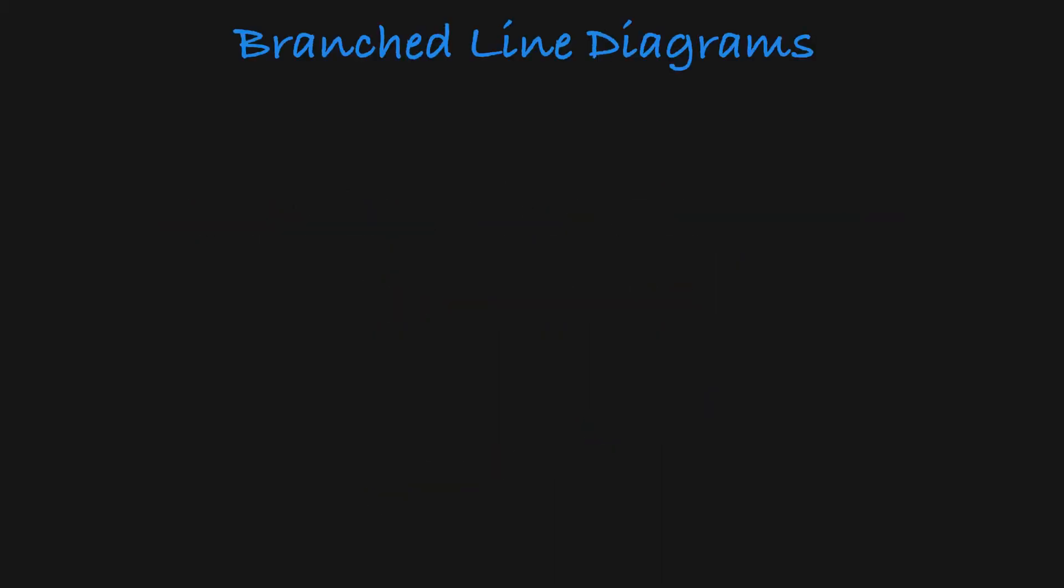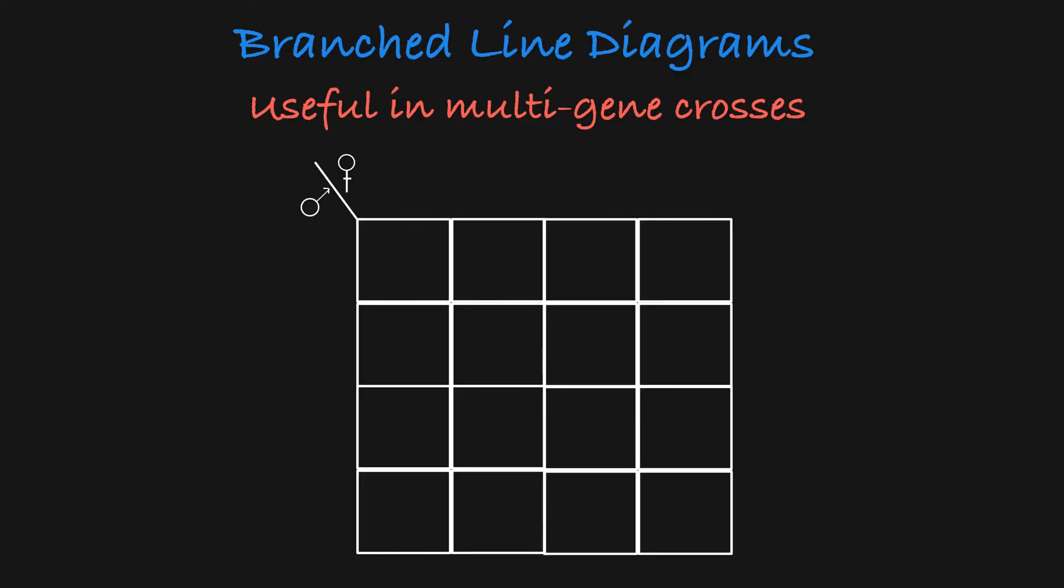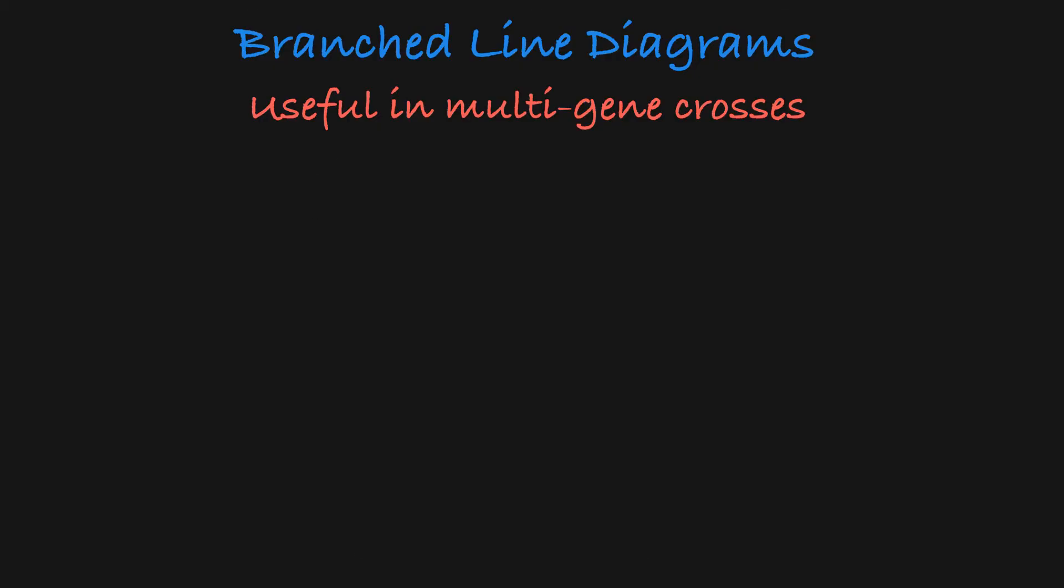How would you determine the expected offspring genotypes and phenotypes in a cross involving more than one gene? The more genes you add to the equation, the larger your Punnett square gets. Even a 16 square Punnett square can be unmanageable. Instead, let's use a branched line diagram.